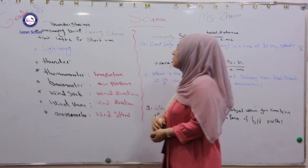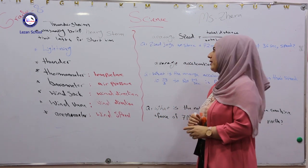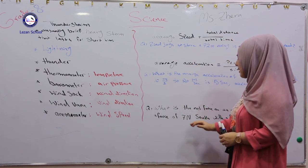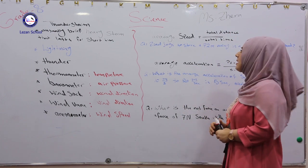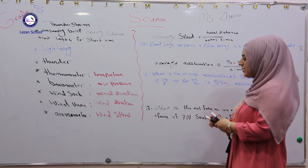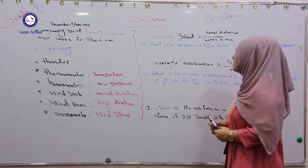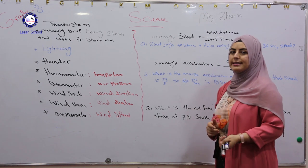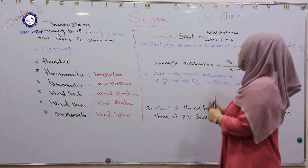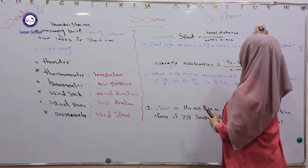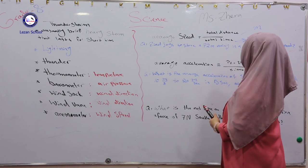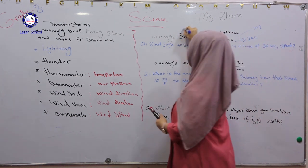In here, we talk about three different things: average speed, average acceleration, and what is force. Average speed equals total distance over total time. As you know, distance is measured in meters and time is measured in seconds. So what's the unit for average speed? Meters per second.